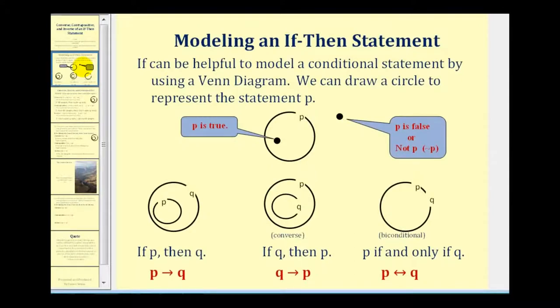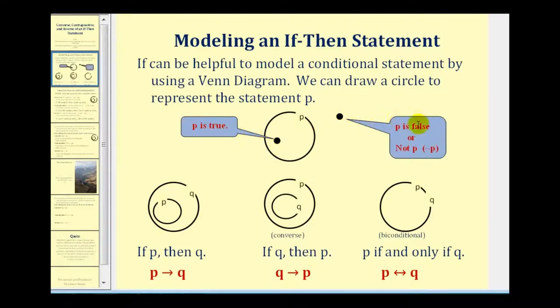It can be helpful to model a conditional statement by using a Venn diagram. We can draw a circle to represent the statement P. So if we're inside P, P is true, and if we're outside P, P would be false, or we could say not P.